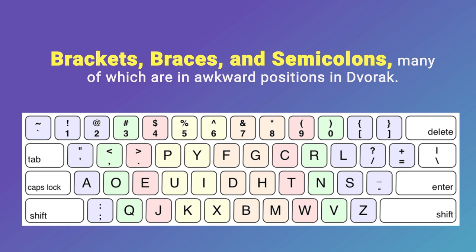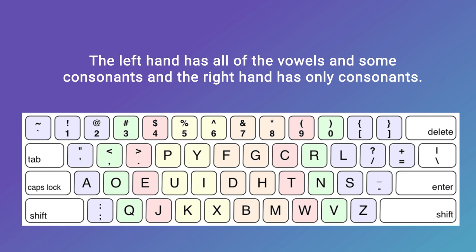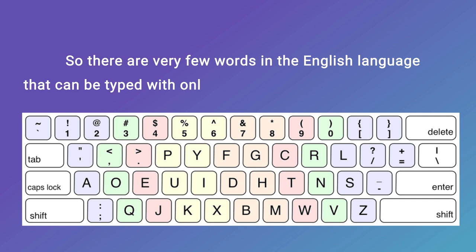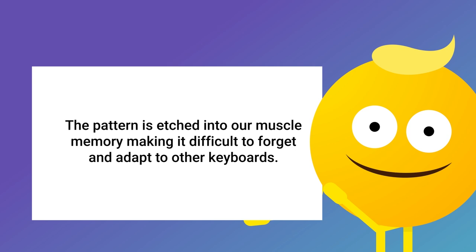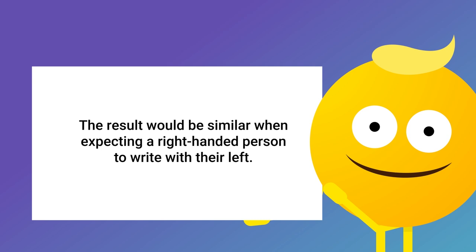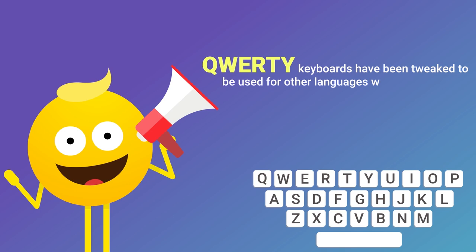In the Dvorak layout, the left hand covers all of the vowels and some consonants, and the right hand covers only the remaining consonants. There are very few words in the English language that can be typed with only one hand on the Dvorak keyboard. Also, since typewriters are designed QWERTY, our fingers are used to this design. The pattern is edged into our muscle memory, making it difficult to forget and adapt to other keyboards. The result will be similar to expecting a right-handed person to write with their left. Finally, QWERTY keyboards have been tweaked to be used for other languages, while the other keyboards are available only in English.